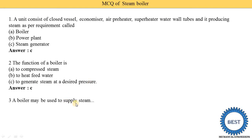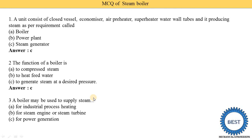A boiler may be used to supply steam for industrial process heating, for a steam engine or steam turbine, or for power generation. The correct answer is 'all of the above' — a boiler may be used for all these purposes.